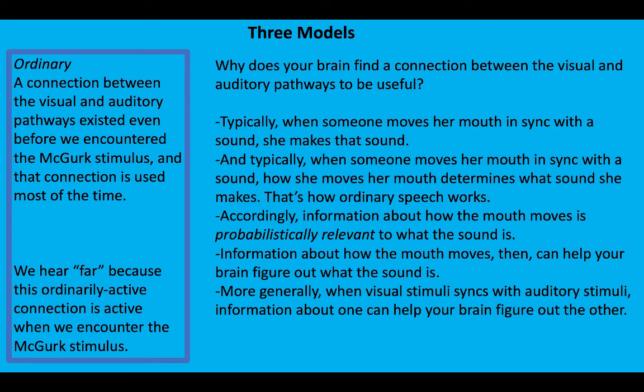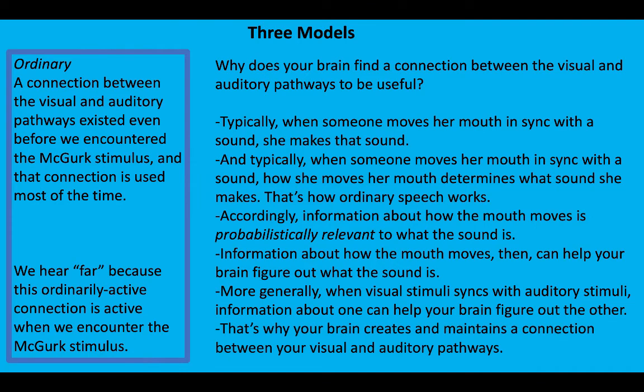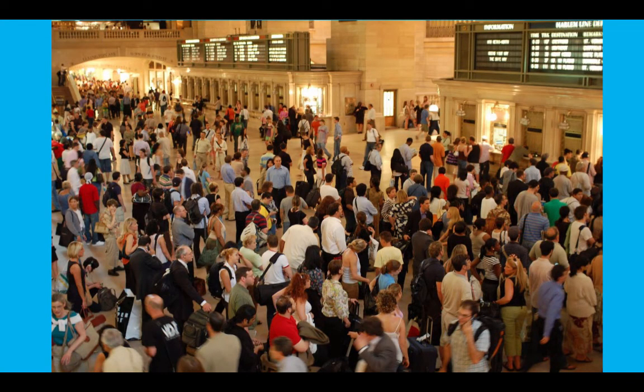More generally, when visual stimulus syncs with auditory stimulus, which it often does, information about one can help your brain figure out the other. That's why your brain creates and maintains a connection between your visual and auditory pathways and why it uses it on a regular basis.